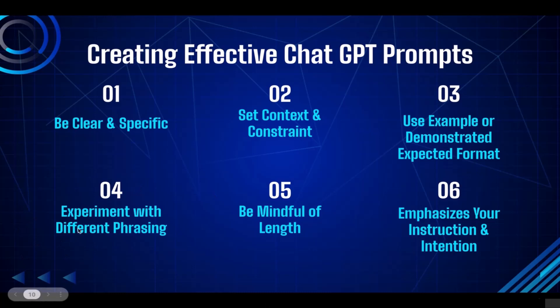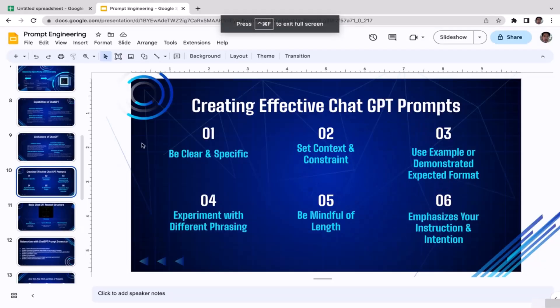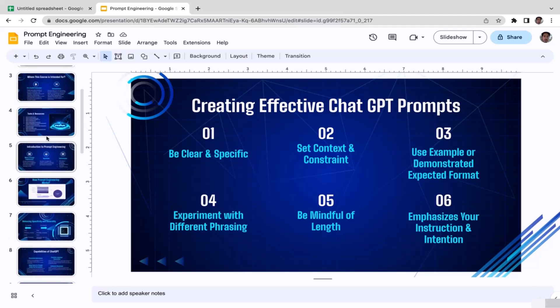Also experiment with different phrasing. For example, if you generate an image and don't get what you expected, you may need to modify the prompt a little bit. The rules are exactly the same as the rules for ChatGPT prompts.